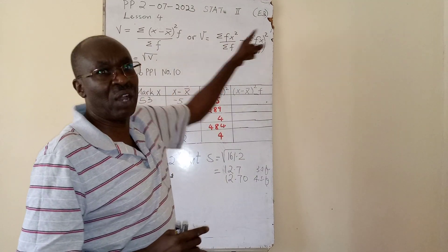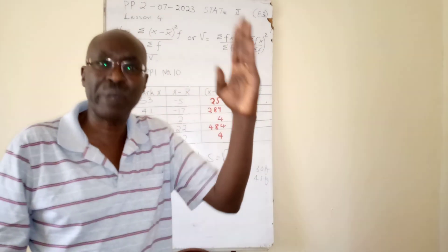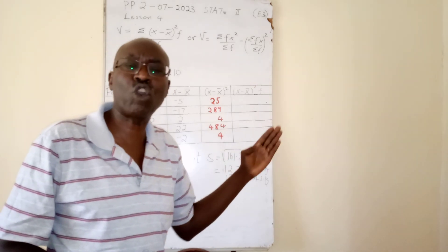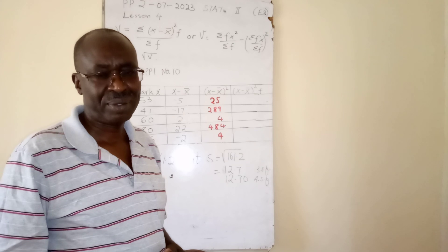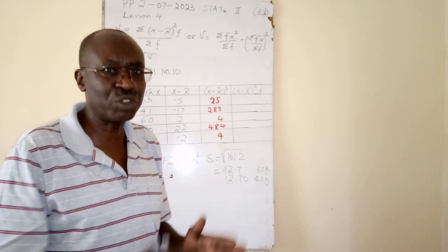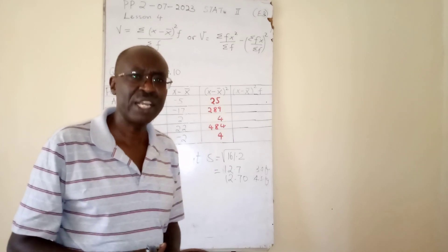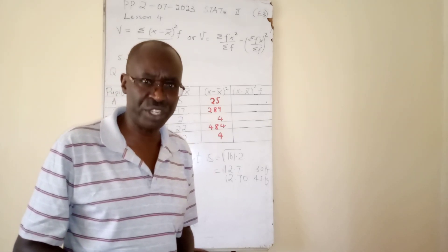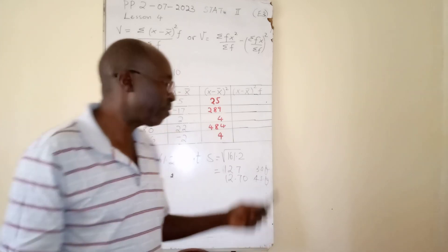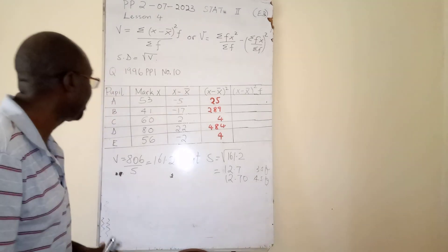From this formula, d now has to be squared. After getting d squared, multiply by corresponding frequencies. You have to create a number of columns to help you get variance. After getting variance you get standard deviation. Let us focus on this question so you can learn more from it.